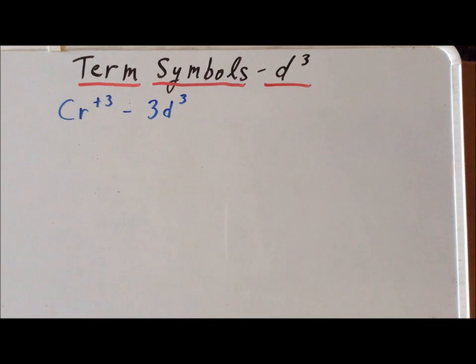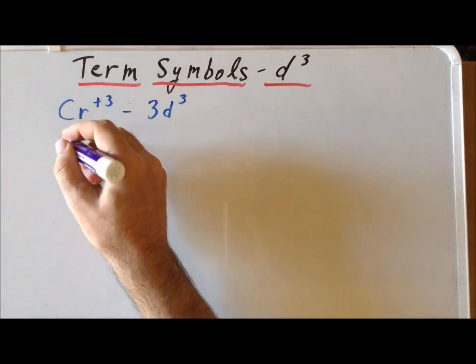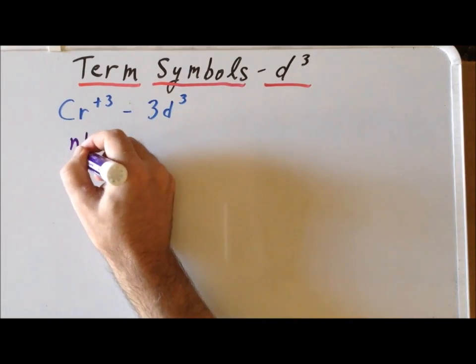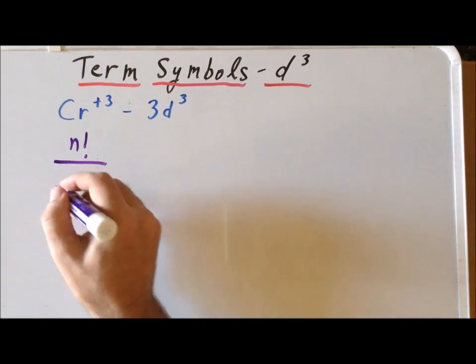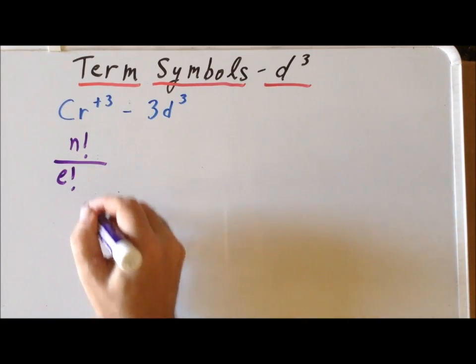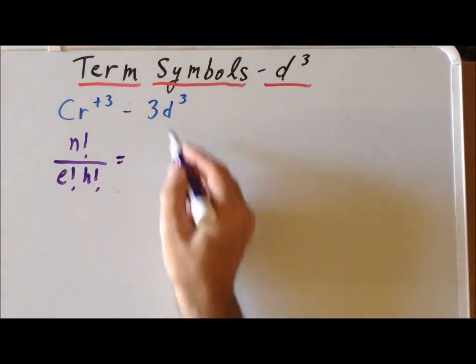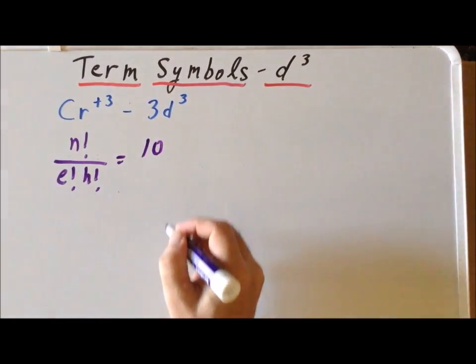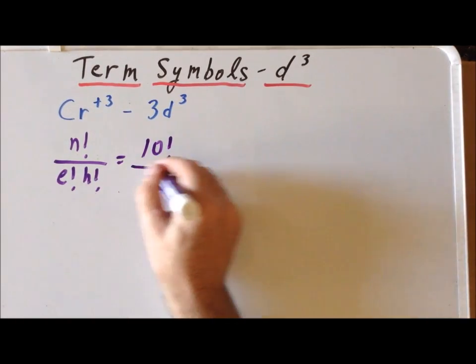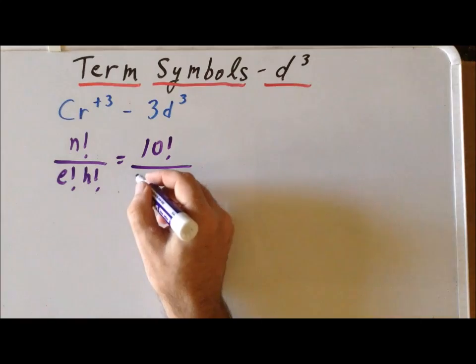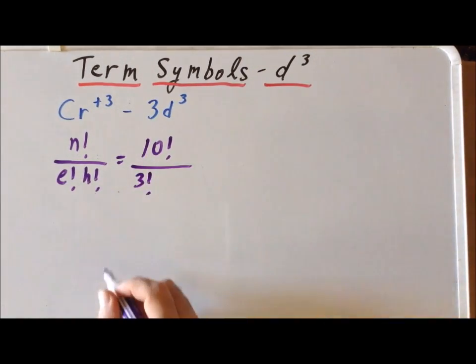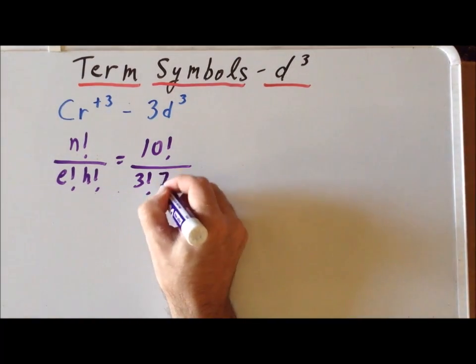Our next step is to determine exactly how many microstates are present. So as we recall, we have the number of spaces divided by the number of electrons factorial times the number of holes factorial. Now, since we have the d orbitals, there's room for 10 electrons. So our numerator is 10 factorial. We are filling it with 3 electrons, so our e is 3 factorial. And the number of holes is the number of empty spaces, spots where there aren't electrons. So that is going to be 7 factorial.